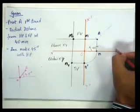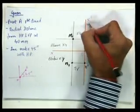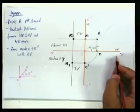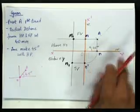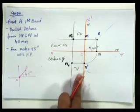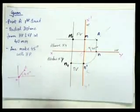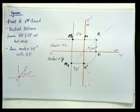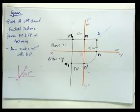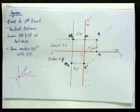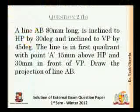This is considered to be as HP and this is considered to be as VP. So this HP is then turned in this direction to meet the vertical plane here. So on HP we have the top view and on VP we have the front view. So this is the solution that is required for question number 2A.